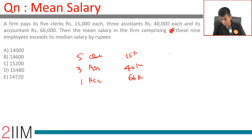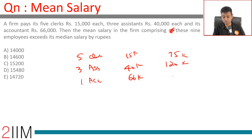Let's find the mean. 5 into 15 is 75k, 3 into 40 is 120k, plus 66k.